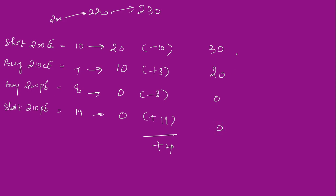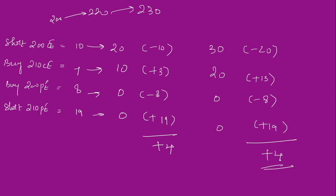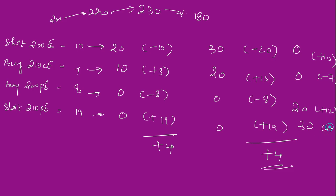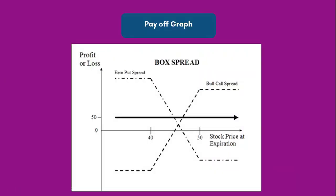Even at 230: premiums become 30, 20, 0, 0 — minus 20 plus 13 minus 8 plus 19 — again 4 rupees profit. If the market goes down to 180: calls become 0, puts become 20 and 30. Making 10, losing 7, making 12, losing 11 — net again 4 rupees profit. When you carefully choose strikes and spreads, you get sure-shot profits. The short box spread payoff graph looks the same — an assured risk-free return on investment, which is what arbitrage means.